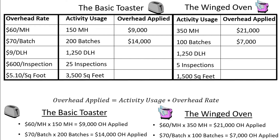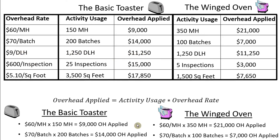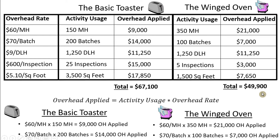Pause the video, calculate the last three overhead applied amounts for the remaining three activities, and then check back to see if you got the same numbers. The answers for the final three overhead applied amounts are now on screen — all we are doing is multiplying the overhead rate by the activity usage to get the overhead applied. Adding up the overhead applied for the five activities, the total overhead applied is $67,100 for the basic toaster and $49,900 for the winged oven.